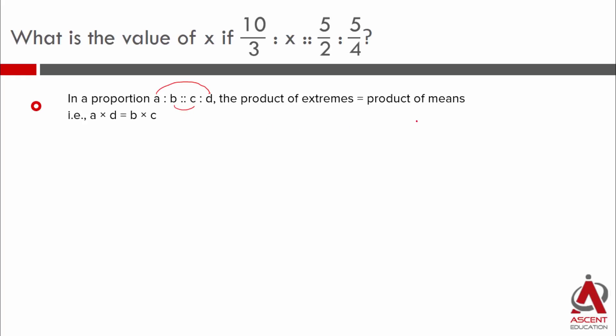If we have a fraction of the ratio, a by b equals c by d, then a into d will equal b into c. Product of the extremes is the same as the product of the means.